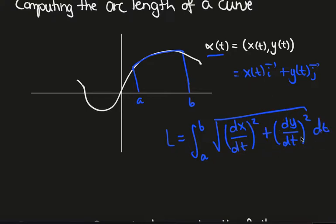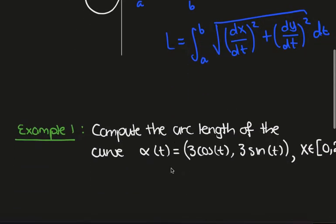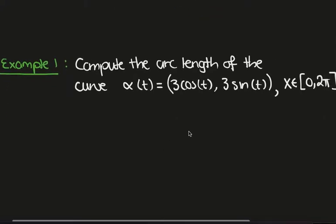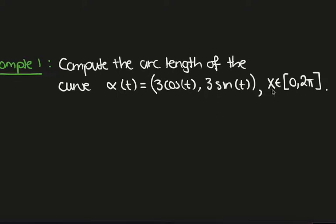If we're in R³, then we'll have a dz/dt term under this square root. Okay, so let's apply that in this example. Compute the arc length of the curve α(t) equals (3cos(t), 3sin(t)), where t is between 0 and 2π.